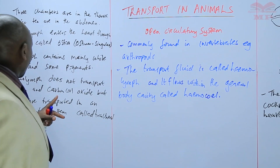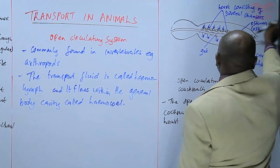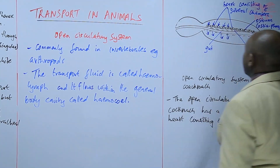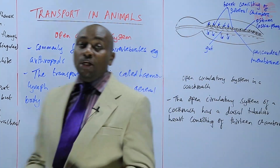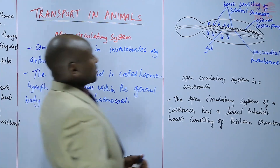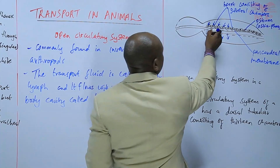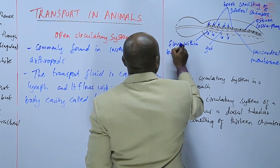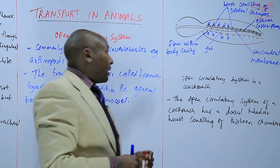Basically, the haemolymph enters the chambers of the heart through the openings called ostia, and those ostia have an outlet on the lower side, and then that cycle is repeated until there is complete circulation of haemolymph within the entire body of the insect. This flow is within the body cavity — the blood is not in closed vessels; it is in open cavities.